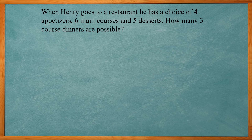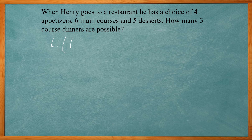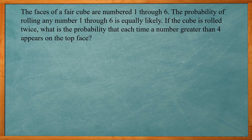Our first example: when Henry goes to a restaurant he has a choice of four appetizers, four main courses, and five desserts. How many three-course dinners are possible? This deals with the fundamental counting principle. For each category we have four, six, and five items. We multiply those numbers together: four times six times five gives us 120. So there are 120 ways to design your three-course dinner.